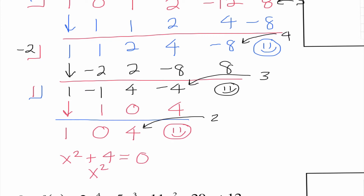So x squared equals negative 4, so x is equal to plus or minus 2i. If I look, I have 1, 2, 3, 4, 5 different answers.